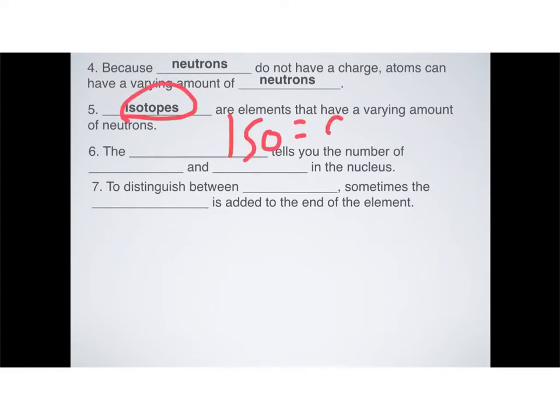Iso means same, and this is actually something that John Dalton was kind of wrong about. He thought that every atom of, say, lithium was exactly the same as every other atom of lithium. But what he didn't realize is that because there are different numbers of neutrons, you could have different weights. You could have a heavier isotope of lithium with extra neutrons, or a lighter isotope of lithium with fewer neutrons.